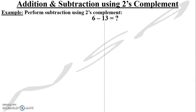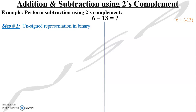Now we are going to learn addition and subtraction using the 2's complement. The first example is to perform 6 minus 13. Step number one is unsigned representation — first, think about the positive version. Forget about the sign and just think of a normal 6 and a normal 13. How do you represent 6 in binary? How do you represent 13 in binary? That is step one.